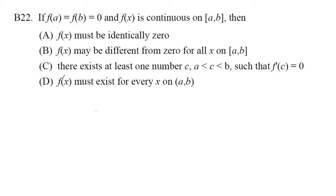We're given f of a is equal to f of b, and they're both zero. f of x is continuous on the closed interval. Then we want to see which of the following is true.